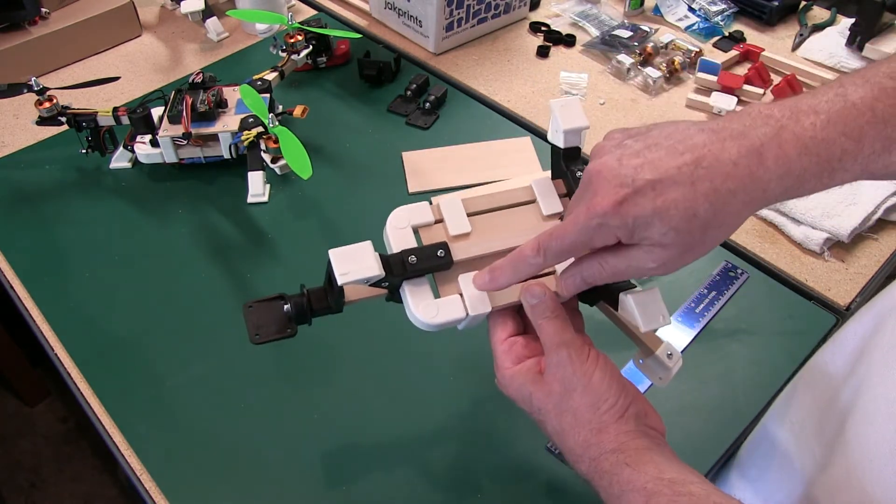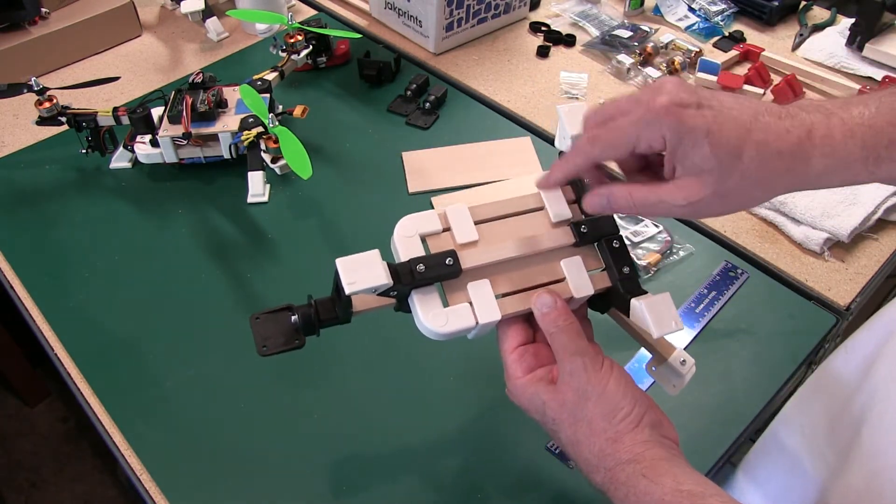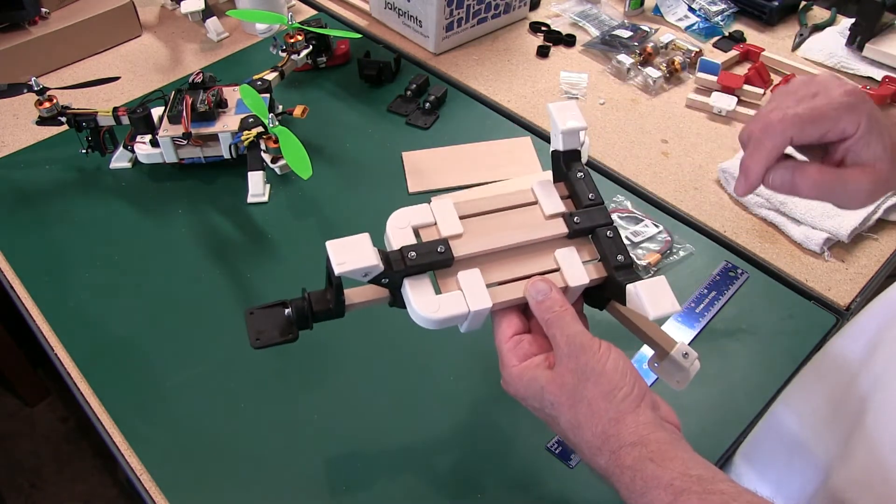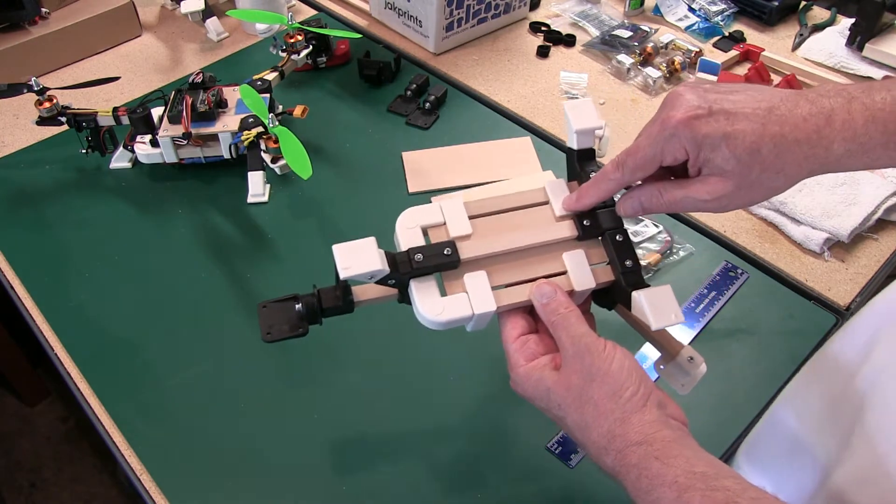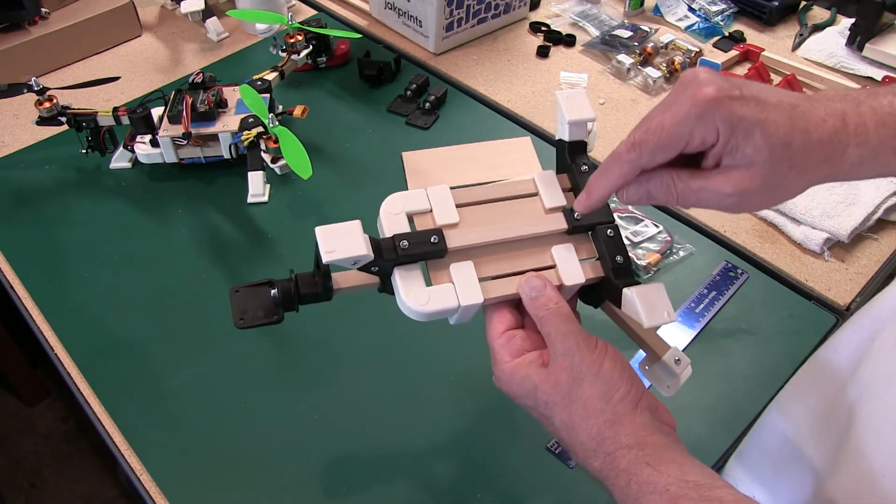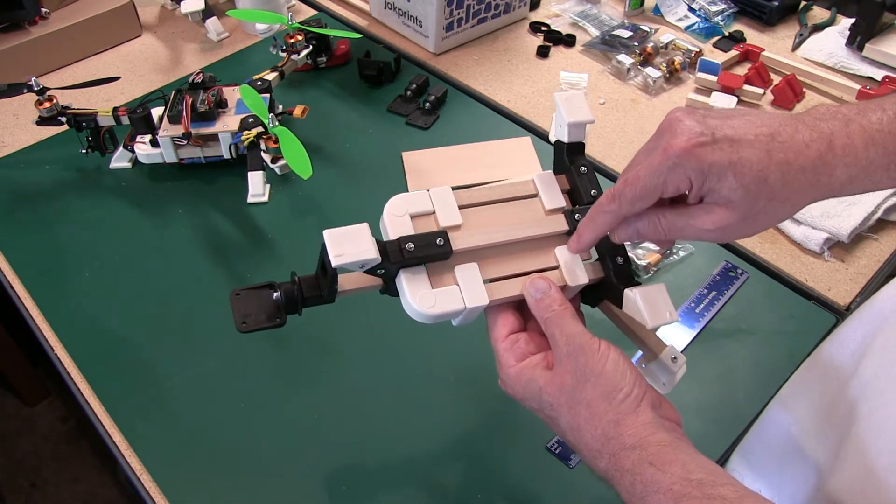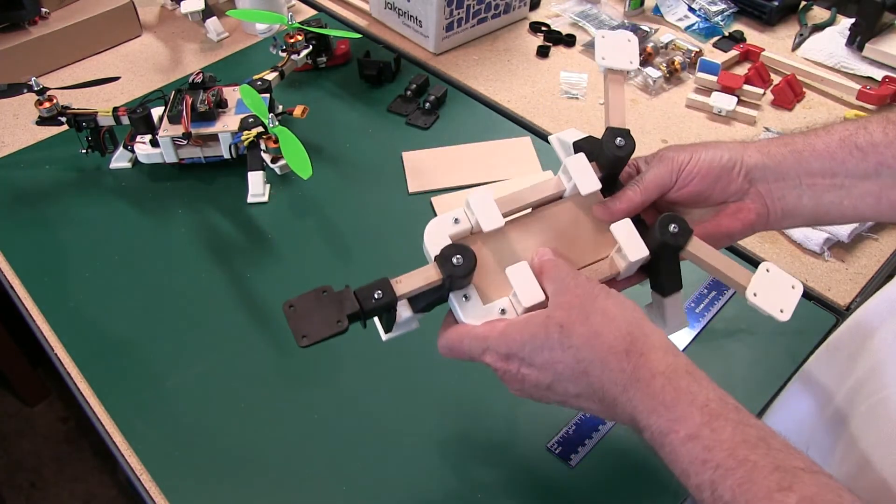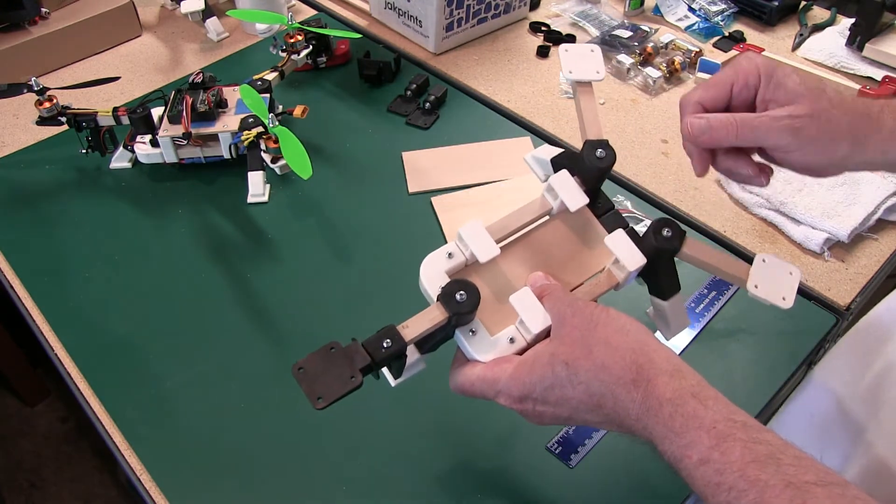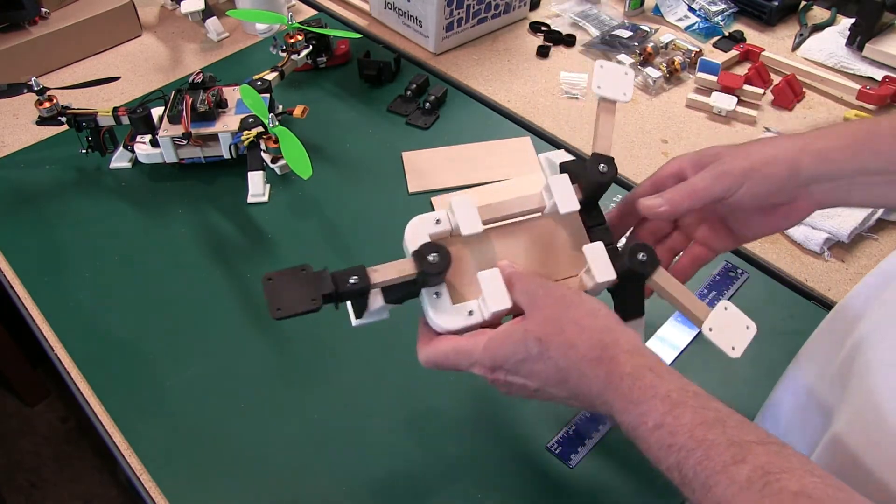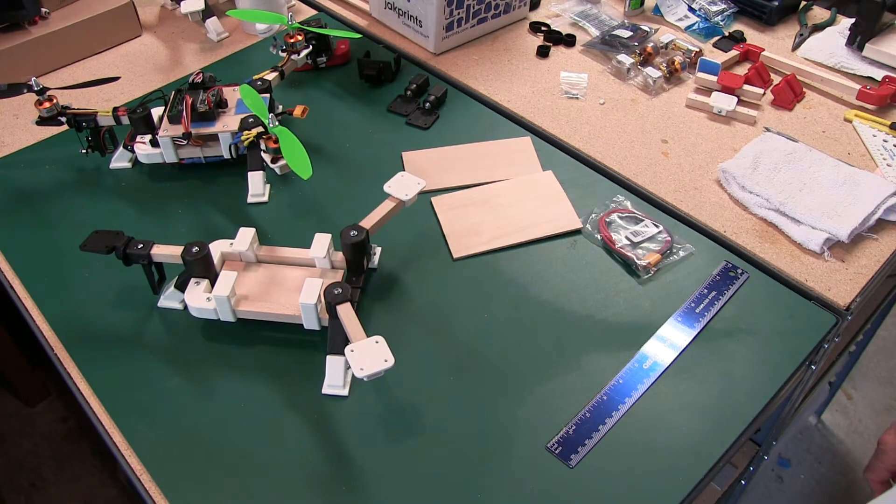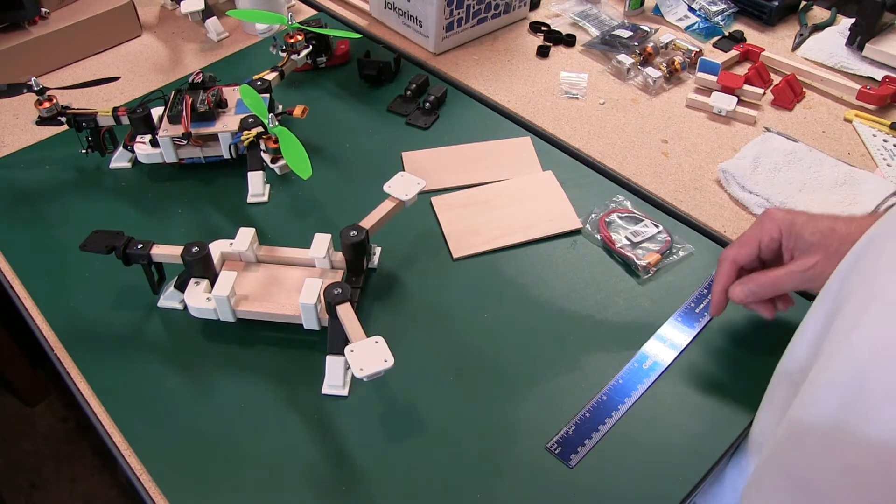Drill some eighth inch holes through the supports here and put your quarter inch screw in. Do an eighth inch hole through the plastic part and then do a sixteenth inch pilot hole through wood and put your quarter inch screw in. I always do the pilot hole just to keep it from splitting. Other than that, I think that's about it on the build. It's pretty simple. It goes together really well.